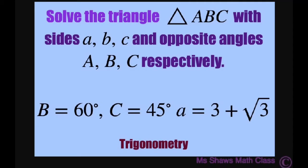Hi everyone! We're going to solve a triangle ABC with sides lowercase a, b, c and opposite angles uppercase A, B, C respectively. We have two angles given: angle B is 60 degrees and angle C is 45 degrees. We have one side a equal to 3 plus square root of 3. So we have to find angle A and sides b and c.